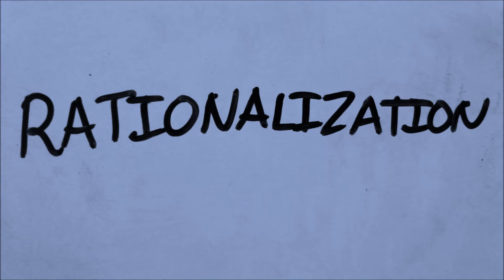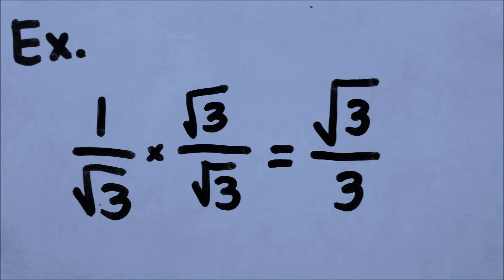Before starting the main tutorial, I'm gonna show you how to rationalize fractions with a radical denominator. This is a step which is very important, especially in finding the values of the functions. It is just easy. For example, 1 over the square root of 3 will be multiplied by square root of 3 to both the numerator and the denominator, which will give us the answer square root of 3 over 3. Because when you multiply two radical functions of the same number, it will just eliminate the radical sign.